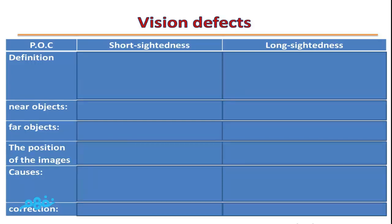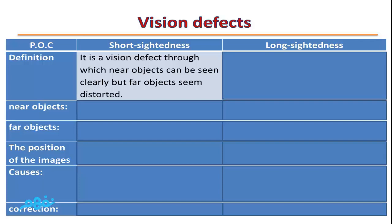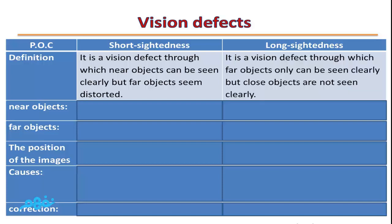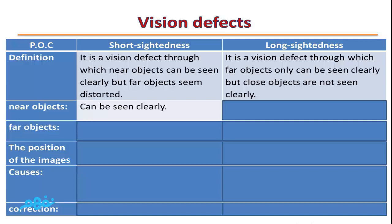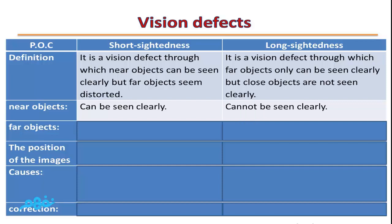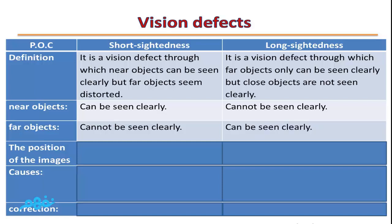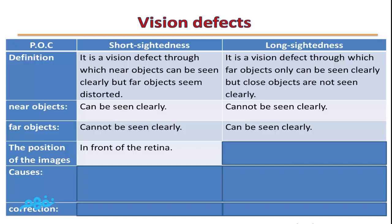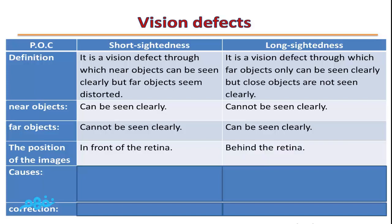Comparing short sightedness and long sightedness: short sightedness is a vision defect through which near objects can be seen clearly but far objects appear distorted. Long sightedness is a vision defect through which far objects can be seen clearly but close objects cannot. In short sightedness, the image forms in front of the retina; in long sightedness, the image forms behind the retina.